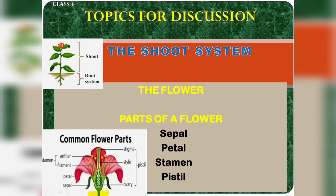Sepal is the outermost whorl of the flower. It is usually green in color and it protects the young flower. Sepals are collectively known as calyx.